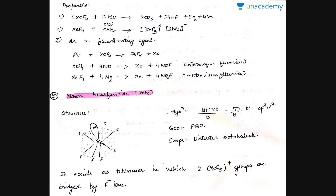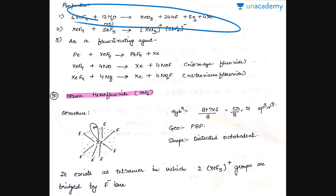The properties of XeF₄ include hydrolysis: when XeF₄ is treated with water it forms XeO₃, HF, oxygen, and xenon. XeO₃ — xenon trioxide — is an explosive compound, so this reaction must be carried out cautiously. XeF₄ also reacts with SbF₅ to form an addition compound. It acts as a fluorinating agent: platinum treated with XeF₄ gives PtF₄ and xenon. XeF₄ with NO forms nitrosyl fluoride (NOF), and with NO₂ it forms xenon and nitryl fluoride (NO₂F).